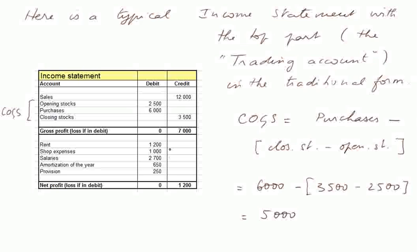Here is a typical income statement with the top part, called the trading account, in its traditional form. The COGS are computed as purchases, 6,000, minus the difference between closing stocks and opening stock. In this example, that yields 6,000 minus 3,500 minus 2,500, that is altogether 5,000. The COGS are 5,000, the sales are 12,000, the gross profit, also called gross margin, is 7,000.